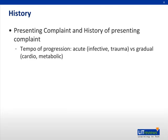A detailed history can point to the cause of respiratory distress. A sudden onset commonly is due to infective causes, especially if there is also fever. A sudden onset associated with trauma or chest pain may be due to a pneumothorax. A gradual onset can suggest heart failure or metabolic causes. Chronic stridor can be due to anatomical aberrancies.